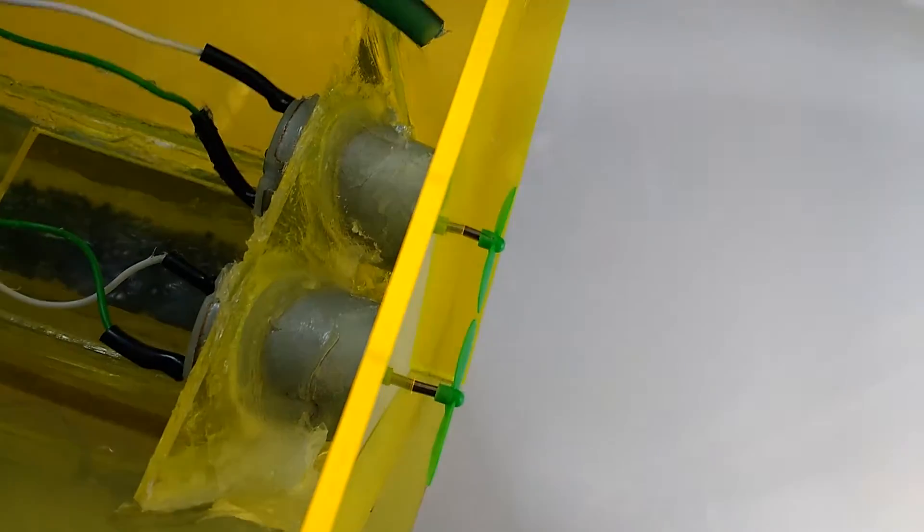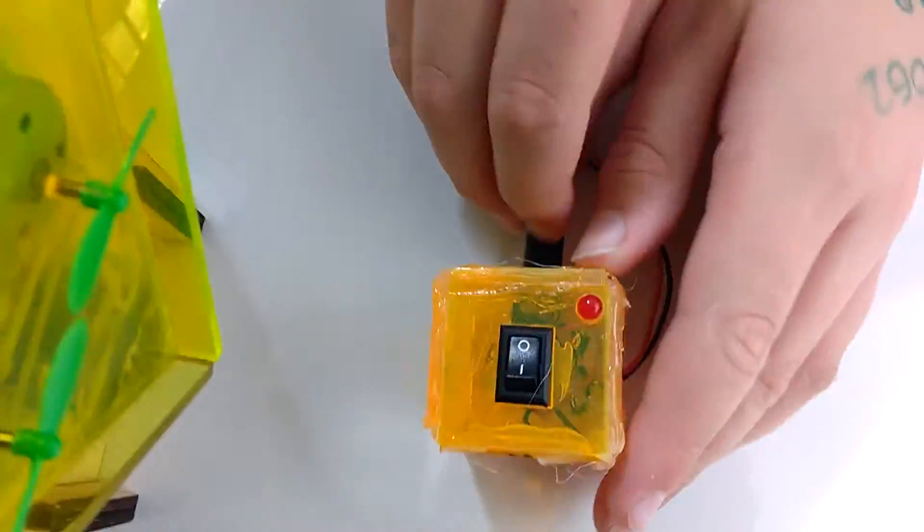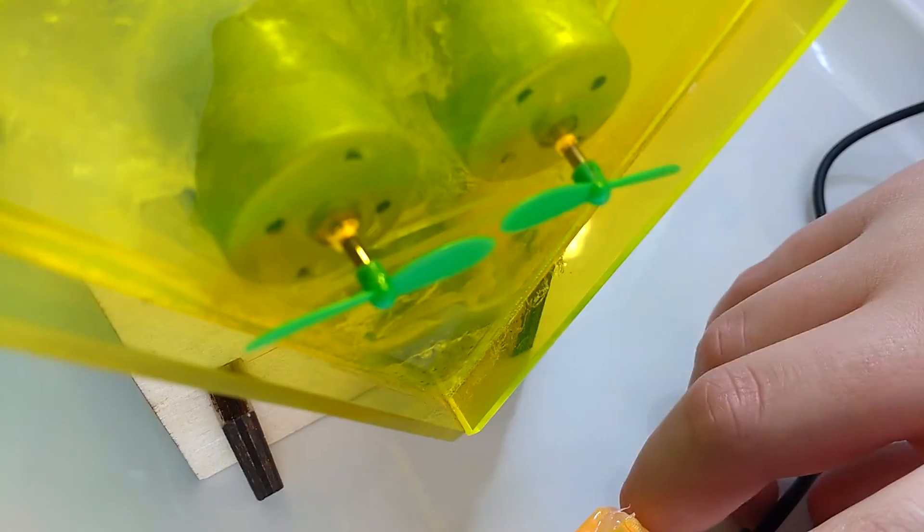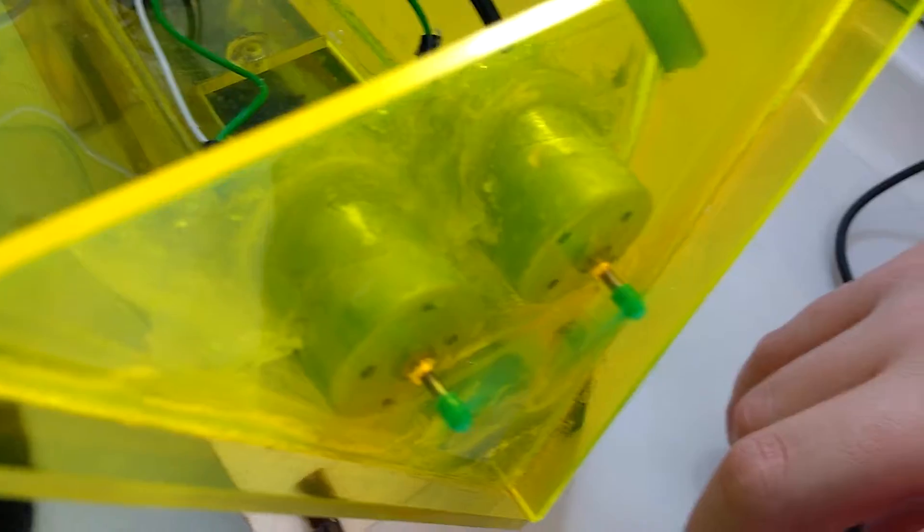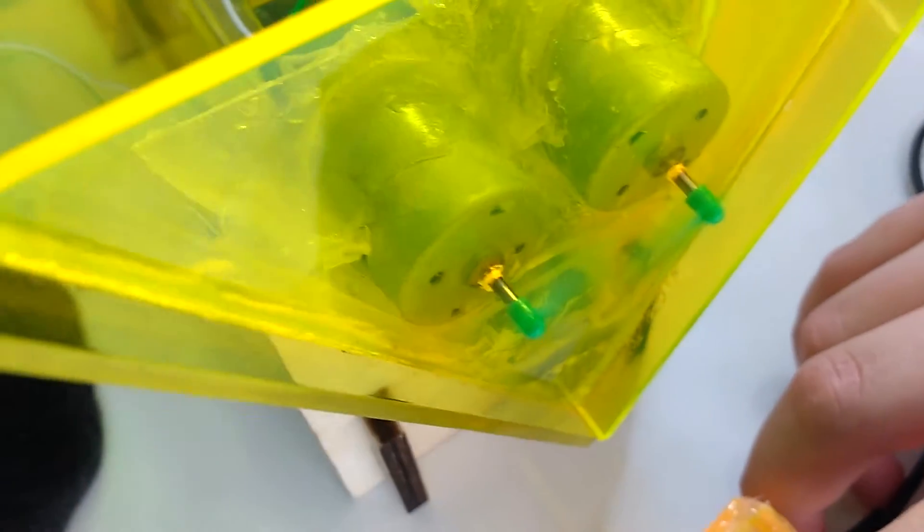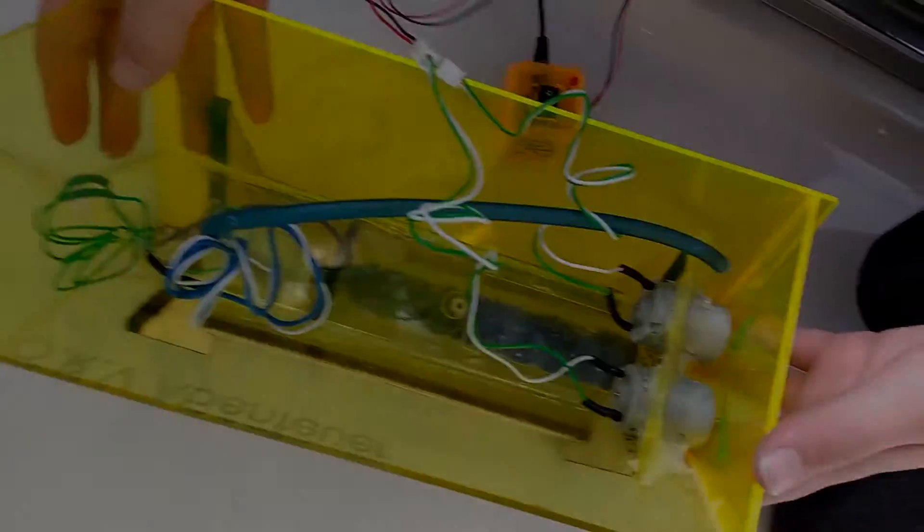Our first test of the motors is going to be running them in air. We've connected them up to our three volt supply. And this is controlled by this switch. So, shall we do it? It's the moment of truth. Three, two, one. Oh, it's like one of them is going. Oh, there you go. That's the diamond switch. That looks perfect. Here we go.